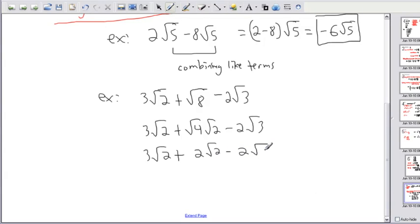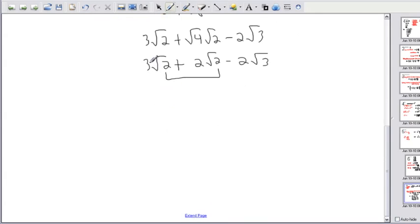So if you look at this, then I'm just rewriting the rest of it. That means 3 root 2 plus 2 root 2 minus 2 root 3. Do you notice now I have two things that I can combine? So see there was something I can do here. Even though it didn't seem like I could, there actually was.